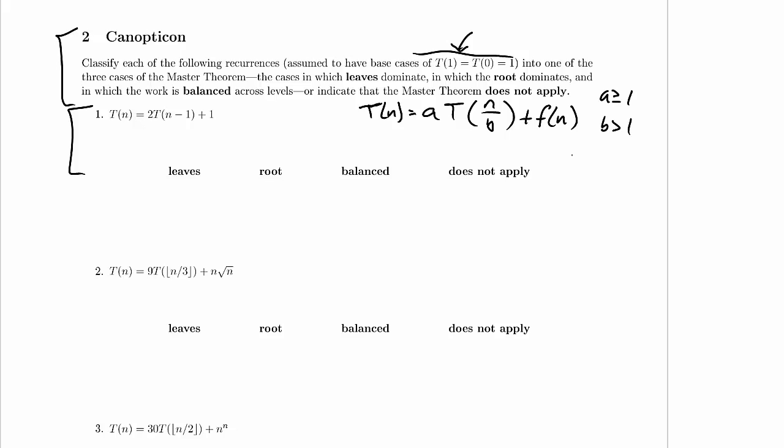Now when are we in the leaf case? So the leaf case was when f of n is in big O of n to the C for C less than n to the log base B of A, and we worked through why that was last time. For the balanced case we had f of n is in theta of n to the C times some extra log factor. And I won't rewrite C here, well I guess I will. It's different on each problem, but it's of the same form on each problem, it's just this comparison operator that changes on each problem.